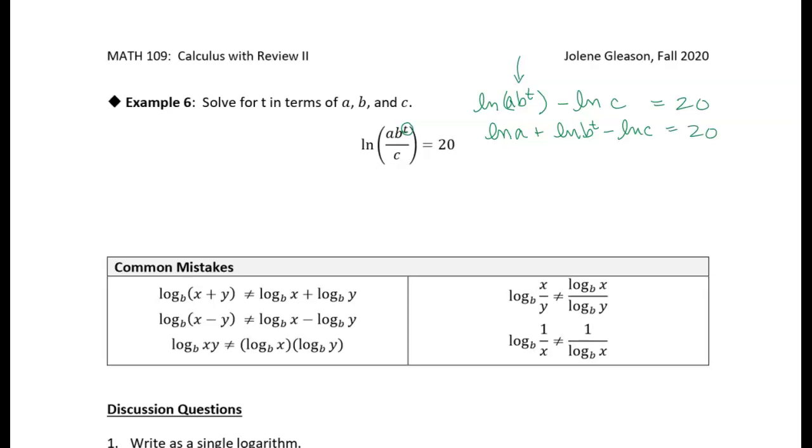And now, I'm trying to solve for t. So I need to get t out of the exponent, right? And bring it out front. So I'm going to use the power property, and I'm going to rewrite this as the natural log of a plus t natural log of b minus natural log of c equals 20.